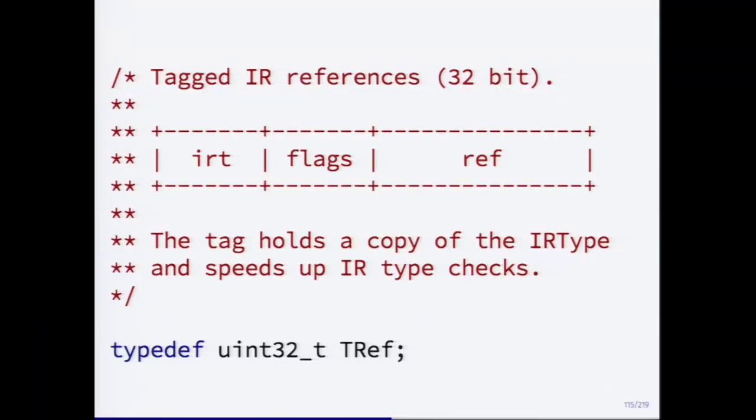Another interesting thing: when passing IR references around, you don't just pass the 16-bit reference — you also load the type of the IR instruction and store it in the reference itself. This allows you to do type checks without looking into the IR array. For example, if a reference points to an instruction producing a number, that information is encoded in the reference, so you can quickly check 'does this return a string?' without accessing the actual IR instruction array.